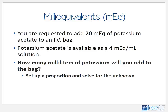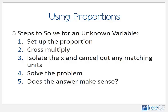Now let's jump into some practical calculations. If you work in a hospital pharmacy, you may be adding electrolytes to IV bags. The pharmacist requests that you add 20 milliequivalents of potassium acetate to an IV bag. The potassium acetate on the shelf is a 4 milliequivalent per milliliter solution. Let's review how a proportion would be set up to figure out how many milliliters to add.